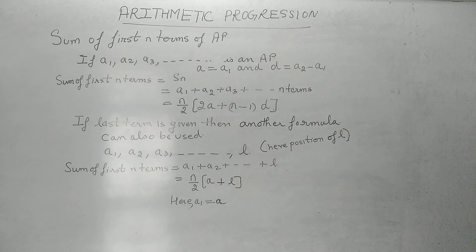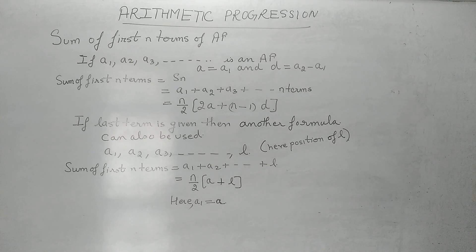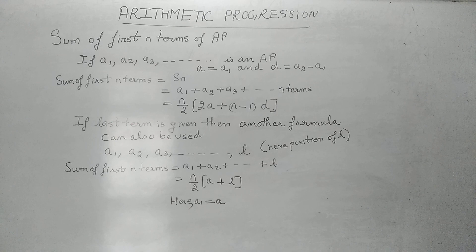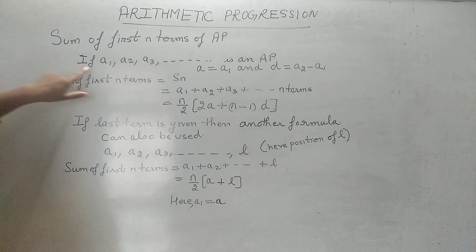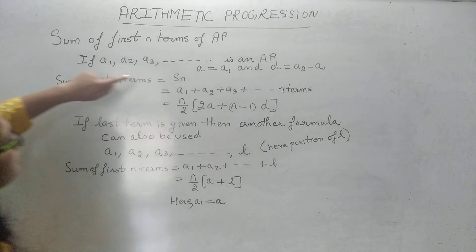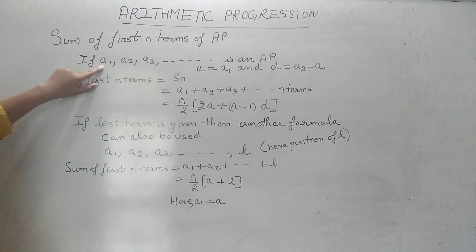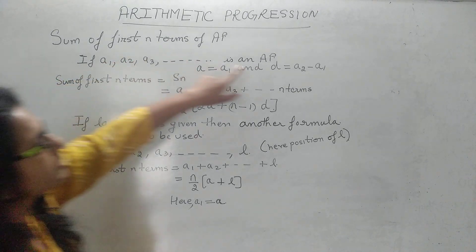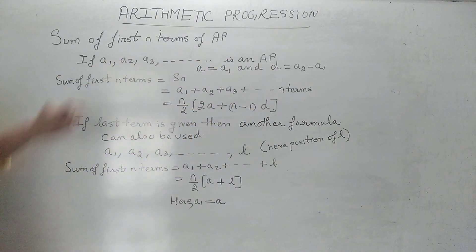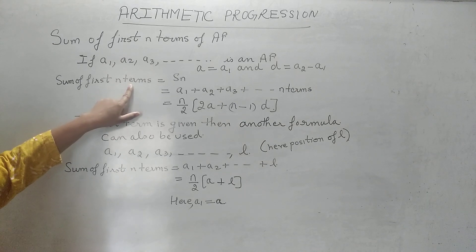Students, let's start with the next topic of arithmetic progression. We have done how to find the nth term of an AP, how to find the position of a term, and how to find whether a given sequence is an AP. Now we are going to find out how to add the terms of an AP. We always take the sum of the first n terms. Suppose an AP is given with terms a1, a2, a3 up to infinity — the first term is a1 and the common difference is a2 minus a1.